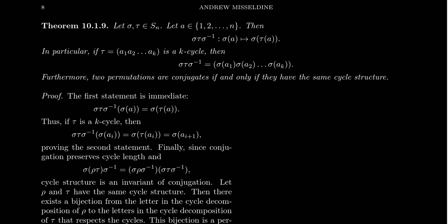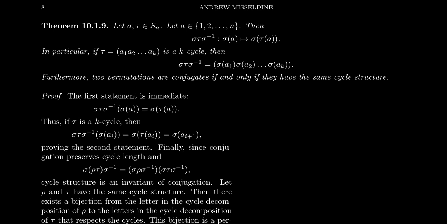In this video we're going to talk about conjugates of permutations inside of the group Sn. Imagine we have two permutations sigma and tau that belong to Sn, and suppose we take some letter A that sits somewhere between 1, 2, all the way up to N. When you take the conjugate — tau conjugated by sigma and sigma inverse — this is going to be itself a permutation belonging to Sn, and it's going to send sigma of A to sigma of tau of A.